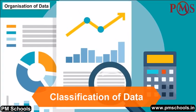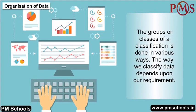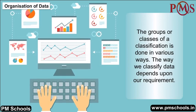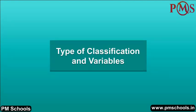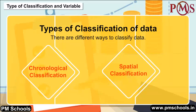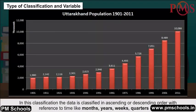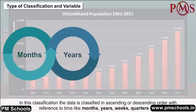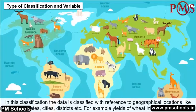Classification of data: The groups or classes of a classification are done in various ways, and the way we classify data depends upon our requirement. Types of classification: There are different ways to classify data. In chronological classification, the data is classified in ascending or descending order with reference to time — like months, years, weeks, quarters, etc.